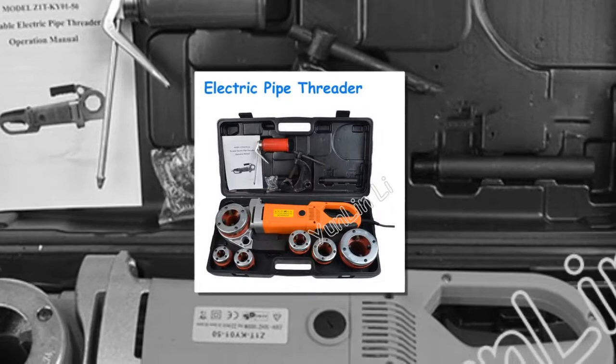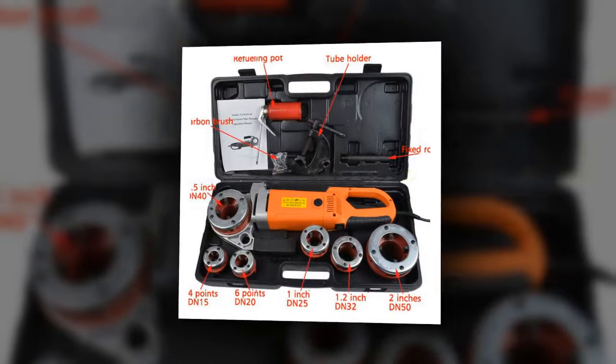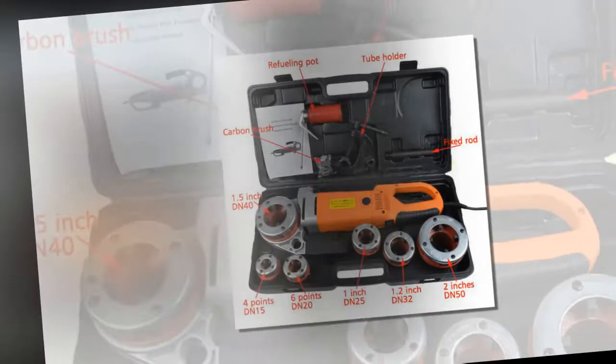This handheld electric threading machine, compared to desktop electric sets, is lightweight. It uses a high-quality die head with long life and clear threads. The die head can be quickly replaced. Operation is effortless, fast, and easy to carry.